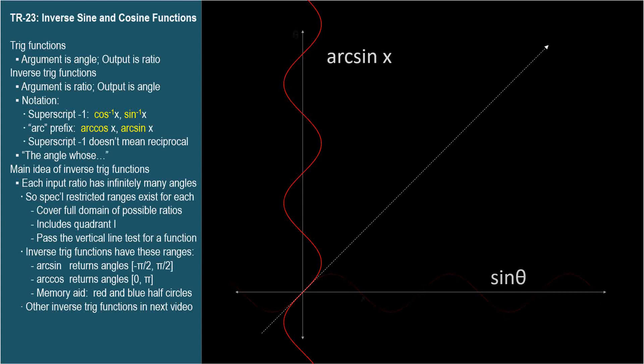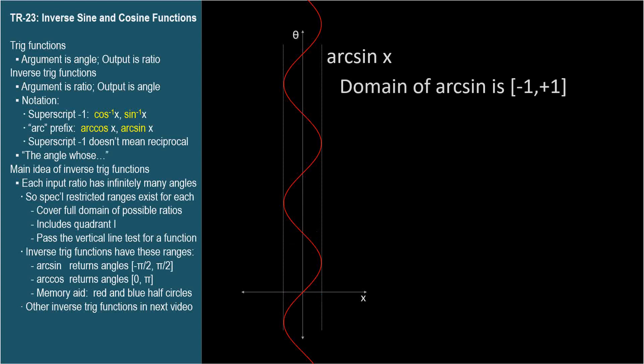We can see that the domain of arc sine is negative 1 to 1. The arc sine is undefined for arguments outside this range. So for example, there's no arc sine of 1.2 because there's no angle whose sine is 1.2.